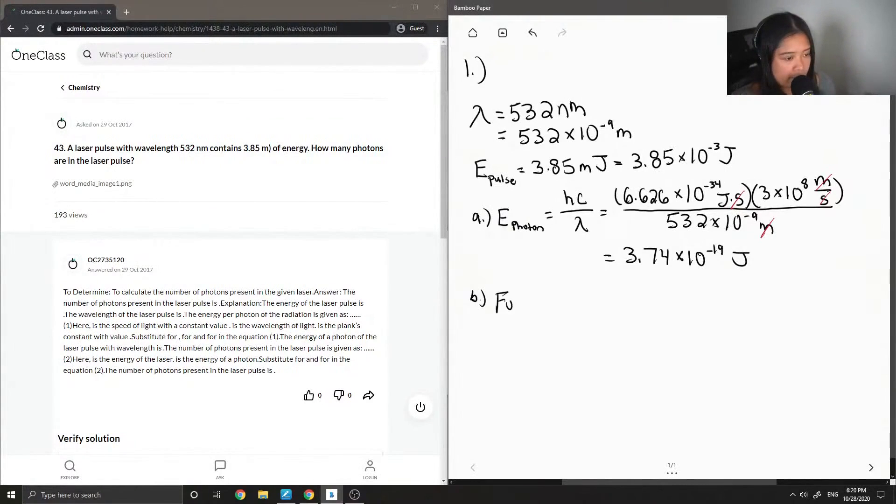When we want to calculate the number of photons, it's the energy of the laser pulse divided by the energy of a single photon. So all we have to do is plug in those values.